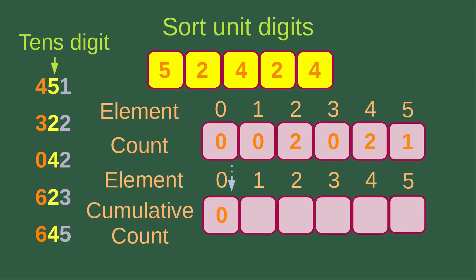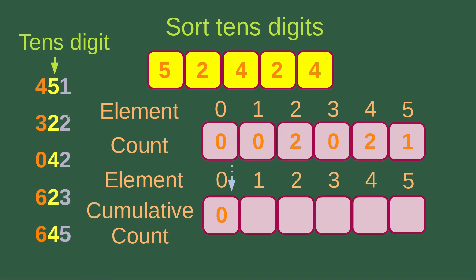After sorting out the unit digit, we can see that the numbers are arranged in ascending order by their unit digits. After that, we just focus on the tens digits, which are the digits shown in yellow. We put these numbers into the unsorted list and then make use of counting sort to handle these digits.